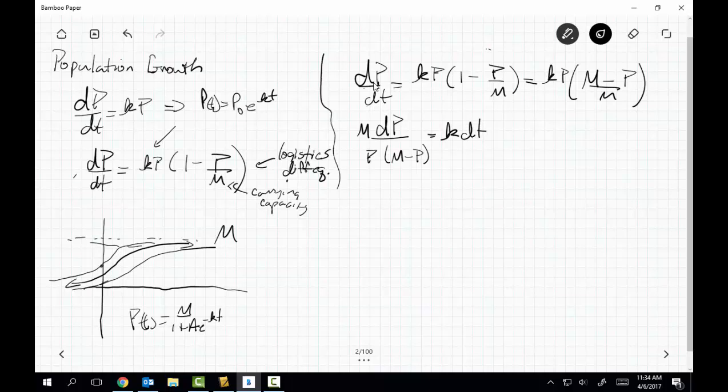And when I take the integral, I know the right-hand side turns into kt plus c, as it always does. Now the left-hand side, think about this for just a sec. I can actually rewrite this using partial fractions. I can rewrite this as 1 over p plus 1 over m minus p, which I can show you really quickly. This is dp.